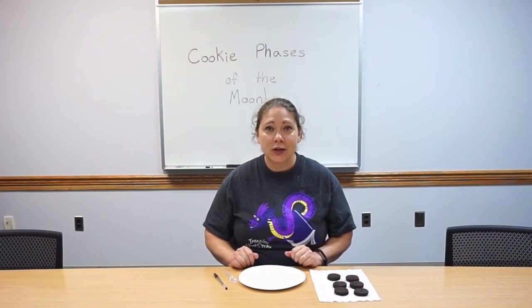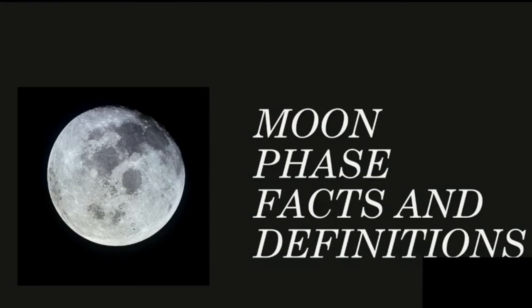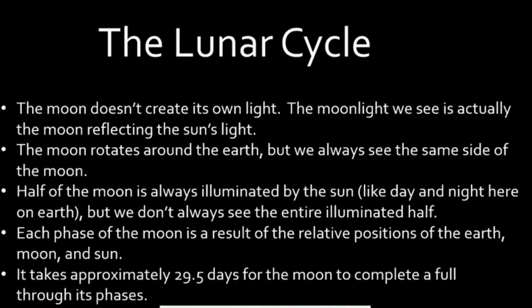Before we create our cookie phases of the moon, we're going to learn some facts about the lunar cycle as well as simple definitions that will help us identify the moon phases. The moon does not create its own light — moonlight we see is actually the moon reflecting the sun's light. The moon rotates around the earth but we always see the same side. Half of the moon is always illuminated by the sun, like day and night here on earth, but we don't always see the entire illuminated half. Each phase of the moon is a result of the relative positions of the earth, moon, and sun. It takes approximately 29.5 days for the moon to complete a full cycle through its phases.